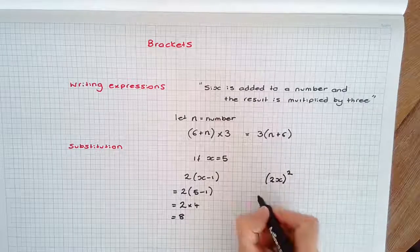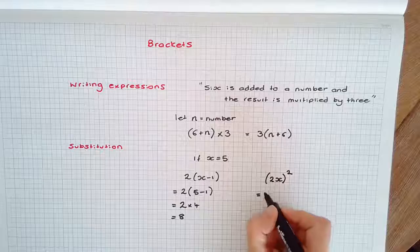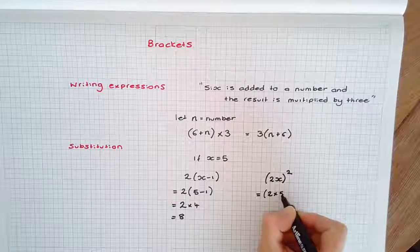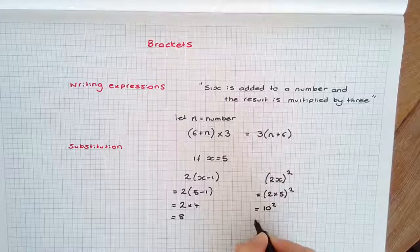We would substitute x for 5, so in the bracket would be 2 times 5, and it is all squared. This would result in 10 squared, or 100.